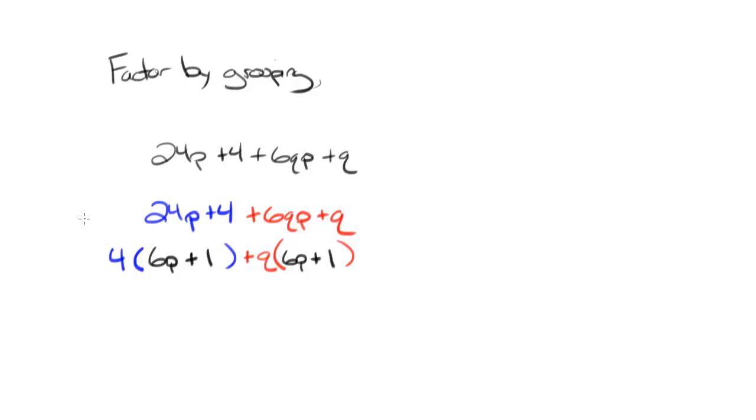All right. So if things are working out well, which they are currently, what I have are exactly the same binomial factor in both of these new terms that I've created right here. In fact, I have this 6p plus 1 and 6p plus 1.